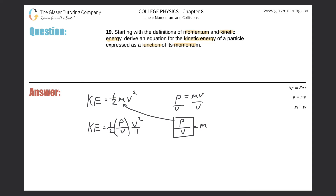So I can simply cancel one velocity from the denominator and reduce the velocity in the numerator by one as well. This works out to be kinetic energy is equal to one-half multiplied by the momentum of the object, then multiplied by its velocity. And that would be the formula that relates kinetic energy to momentum. Thanks for tuning in — please remember to hit that subscribe button, and I'll see you in the next question.